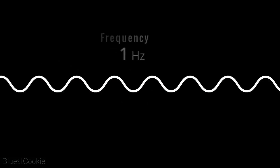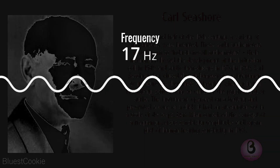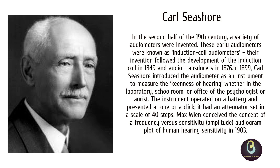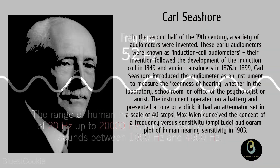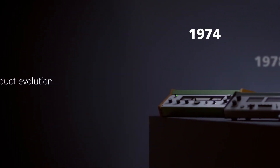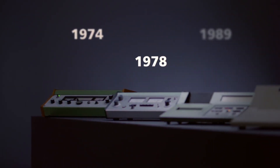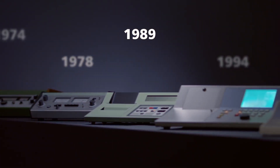So where did it all begin? In 1885, Arthur Hartman designed an auditory chart, which included left and right ear tuning fork representation. In 1899, Carl Seashore introduced the audiometer as an instrument to measure the keenness of hearing, whether in the laboratory, school room, or office of the psychologist or artist. The instrument operated on a battery and presented a tone or a click, and had an attenuator set in a scale of 40 steps. Max Wein conceived of the concept of a frequency-versus-sensitivity amplitude audiogram plot of human hearing sensitivity in 1903.